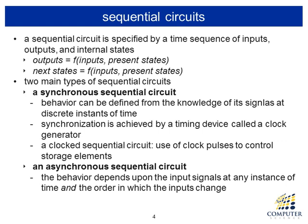In a combinational circuit, the output is dependent upon only the current input right now. But in a sequential circuit, the outputs depend not only on the current input but also on something that happened in the past, which is stored in the system. What is remembered in the system is called the state. The next state is a function of the current inputs and present states.